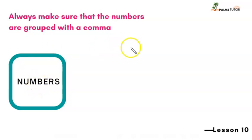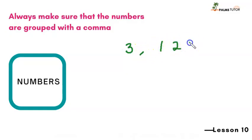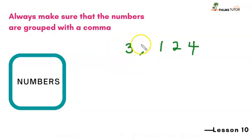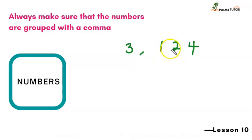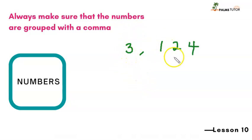Let's see this one: 3,124. This is where it gets really interesting — you can see we have another group, and this actually belongs to the group of thousands. So we start from the left and we have: three thousand, one hundred and twenty-four.